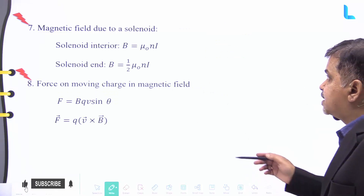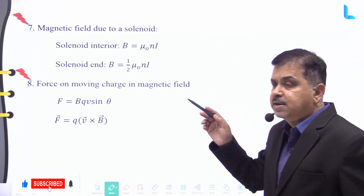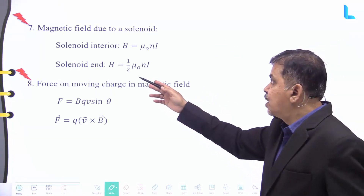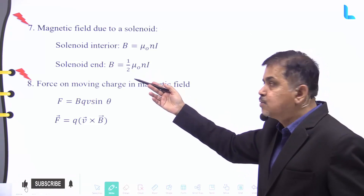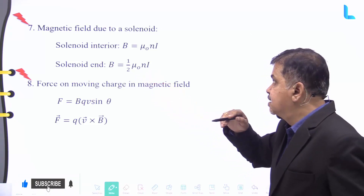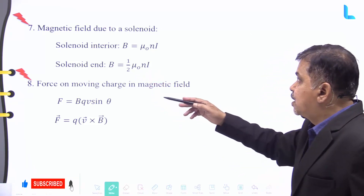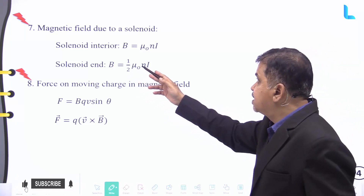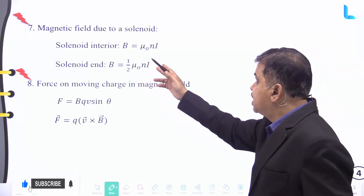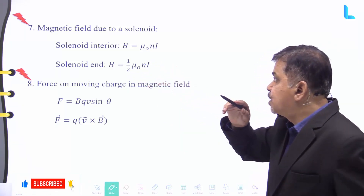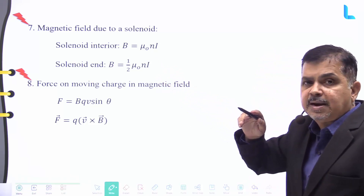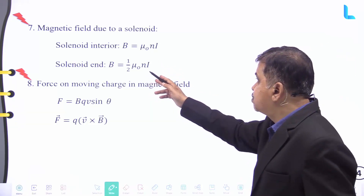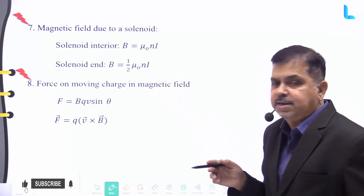The magnetic field due to a solenoid has two cases: at the interior and at the end. At the interior of the solenoid, the magnetic field is equal to mu naught times n times i. At the end, it is equal to half times mu naught times n times i.